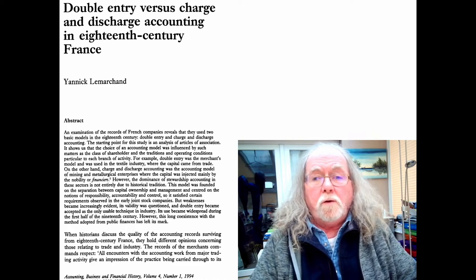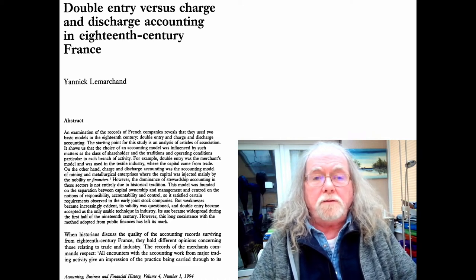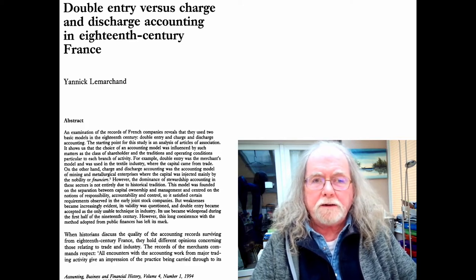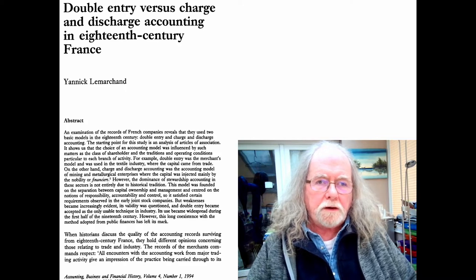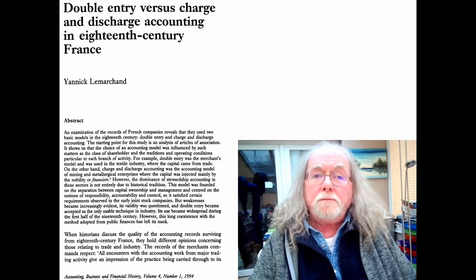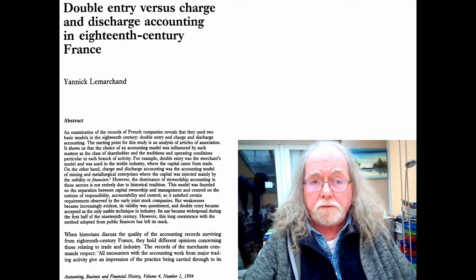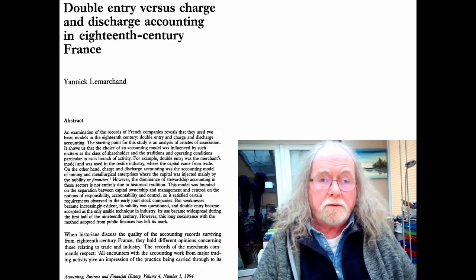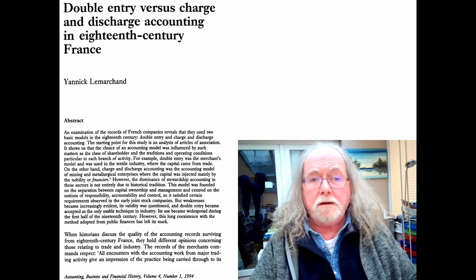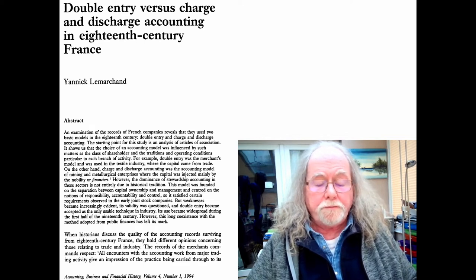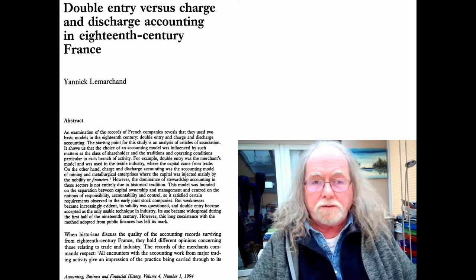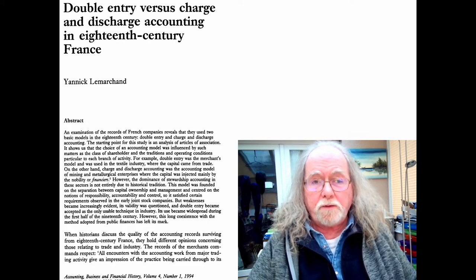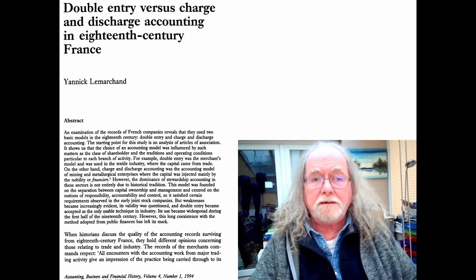Charge and discharge effectively looks at the cash balance and assesses whether it's correct or not. If it's not correct, then typically the cashier, bookkeeper, or whoever is responsible would have to make up the difference. It looks at whether management have controlled what's going on effectively, and it was used for much, much longer than double entry, right across several parts of Europe, including England around the time of the Norman Conquest. Double entry also can provide identification of things for responsibility, accountability and control, and in the latest conceptual framework of the IASB, stewardship is one of the things they focus on.